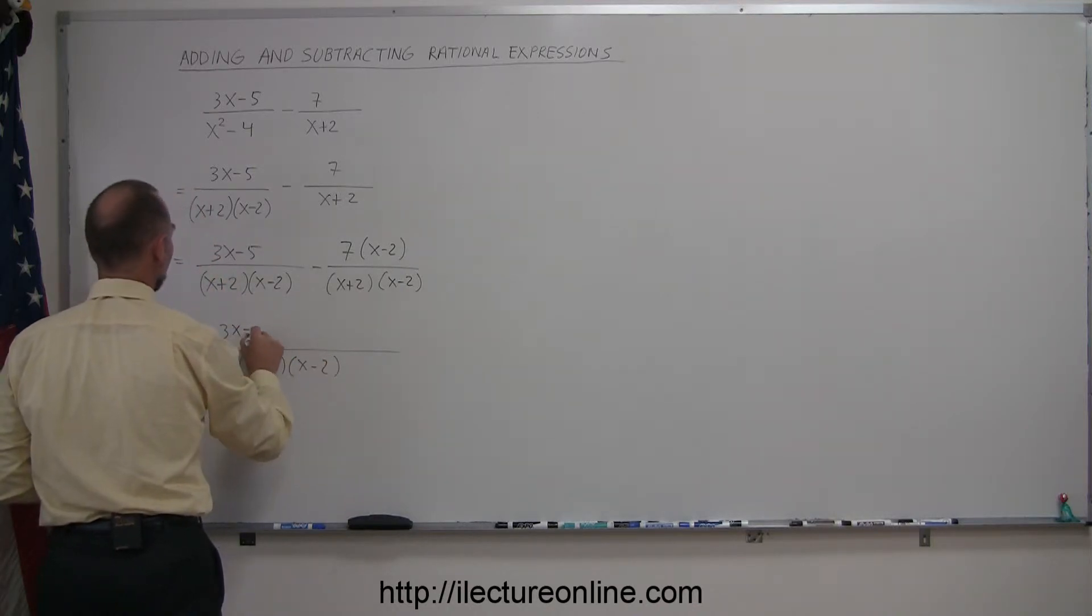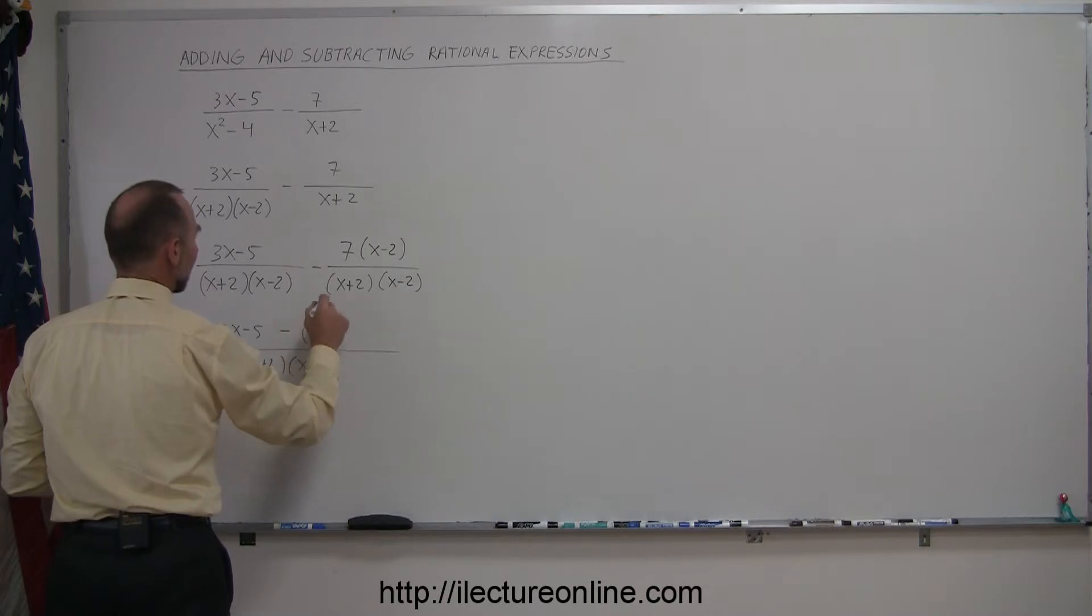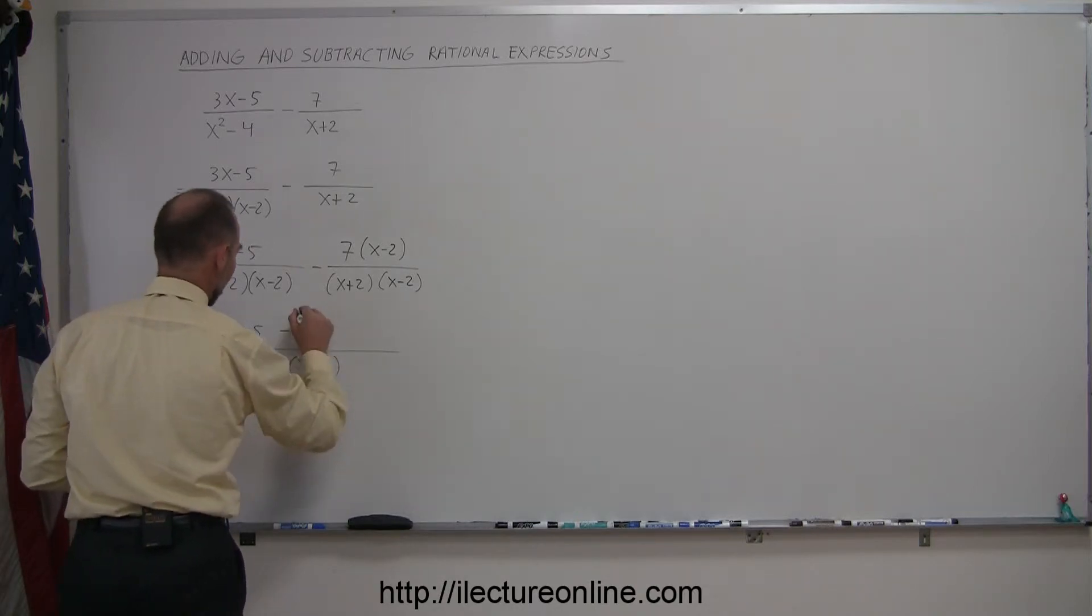we have 3x minus 5, and then we subtract from that 7, and I'll use brackets, 7 times x minus 2.